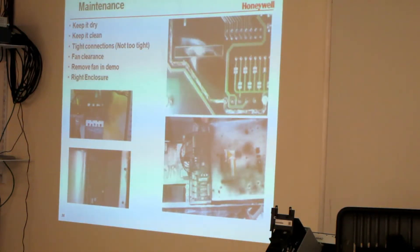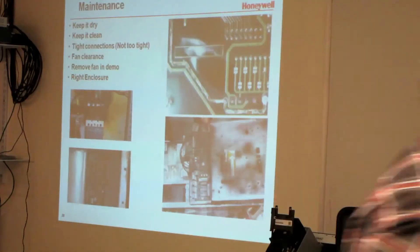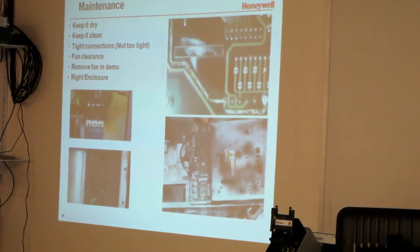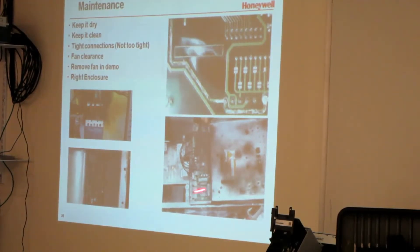So, important things are maintenance. Keep it dry, keep it clean, tight connections. One of the biggest problems you have is people over-tighten the connections and they break. These don't just plug in, they have to be soldered in place. And I want to be able to show you how to remove the fan on the newer model. I'm going to do that. In the right enclosure, you want to make sure that you have the proper enclosure. You can see some spots here where you've got dirt or moisture on the boards. And that kind of does a number on the circuit. Have you ever heard one of these things go pop?